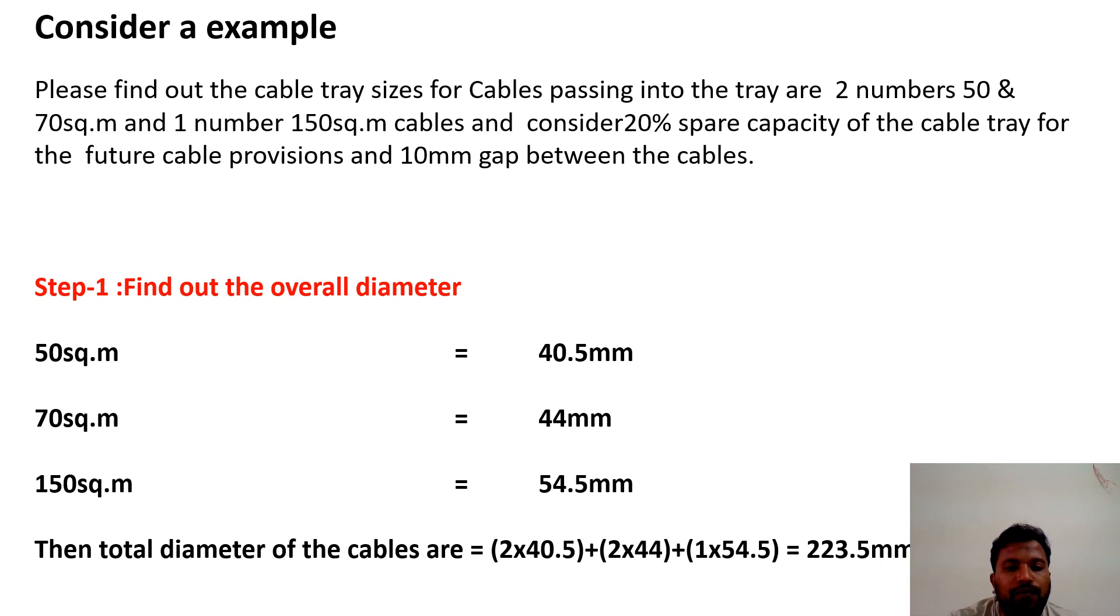Now we will calculate the total diameter of the cables. Add 2 into 40.5mm, I have 2 cables, so that's why I multiply by 2 into 40.5mm plus 2 into 44mm plus 1 into 54.5mm. If you are adding these values, you will get 223.5mm. This is the overall diameter of the cables.